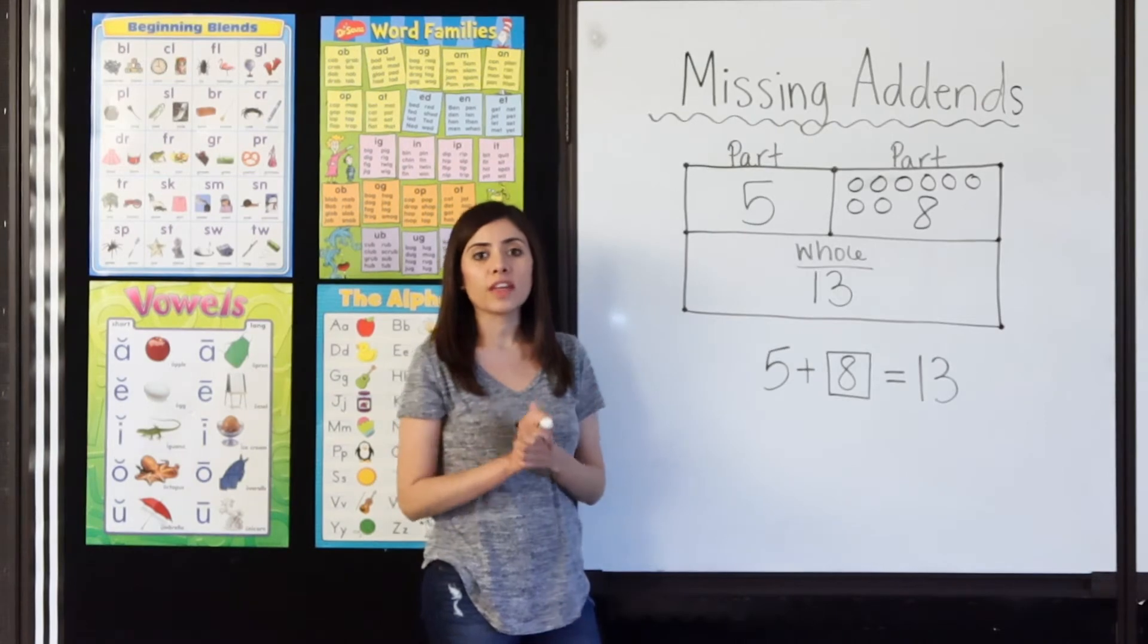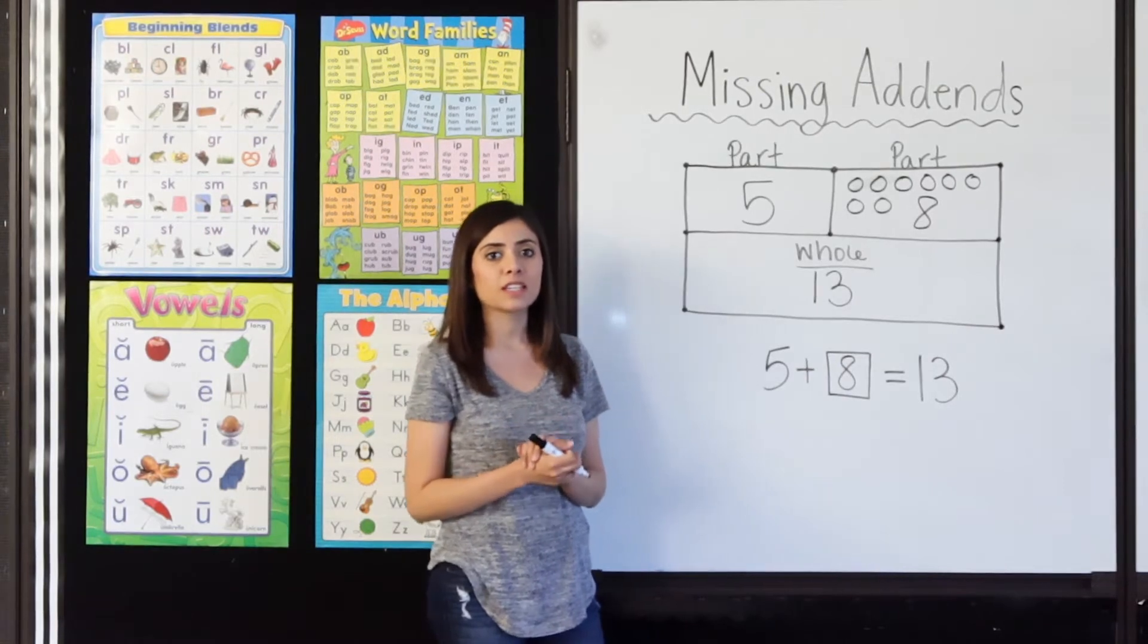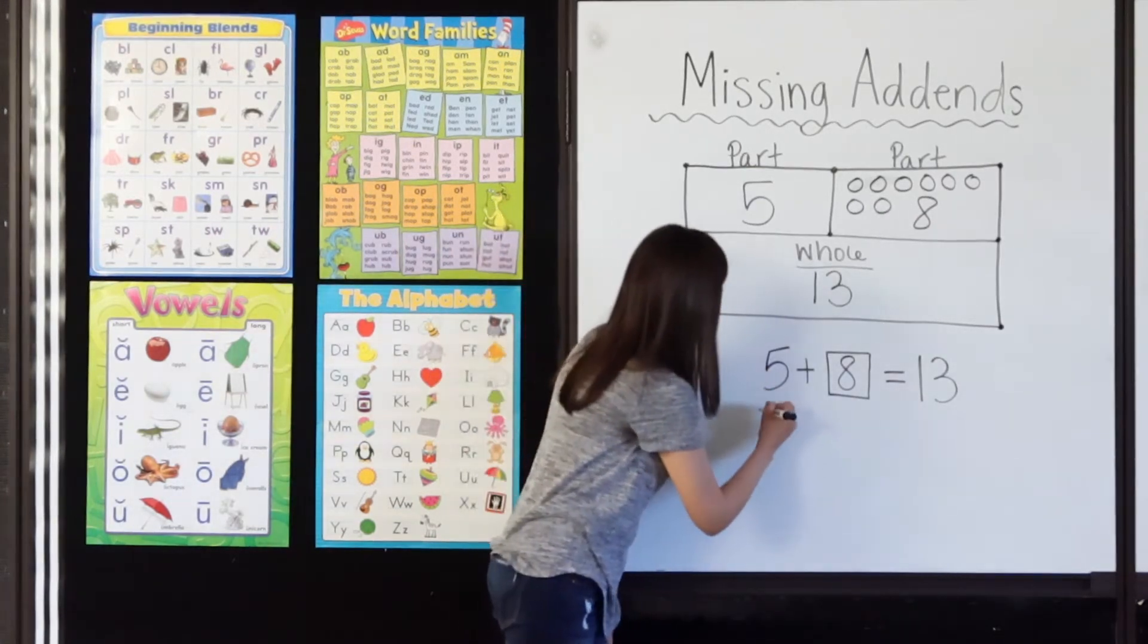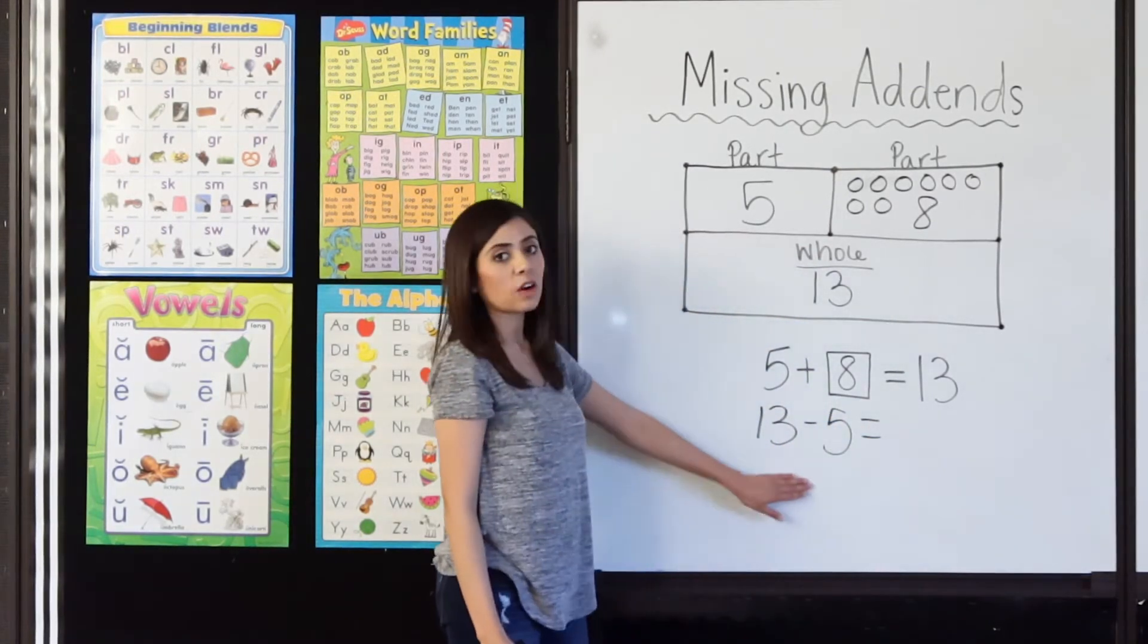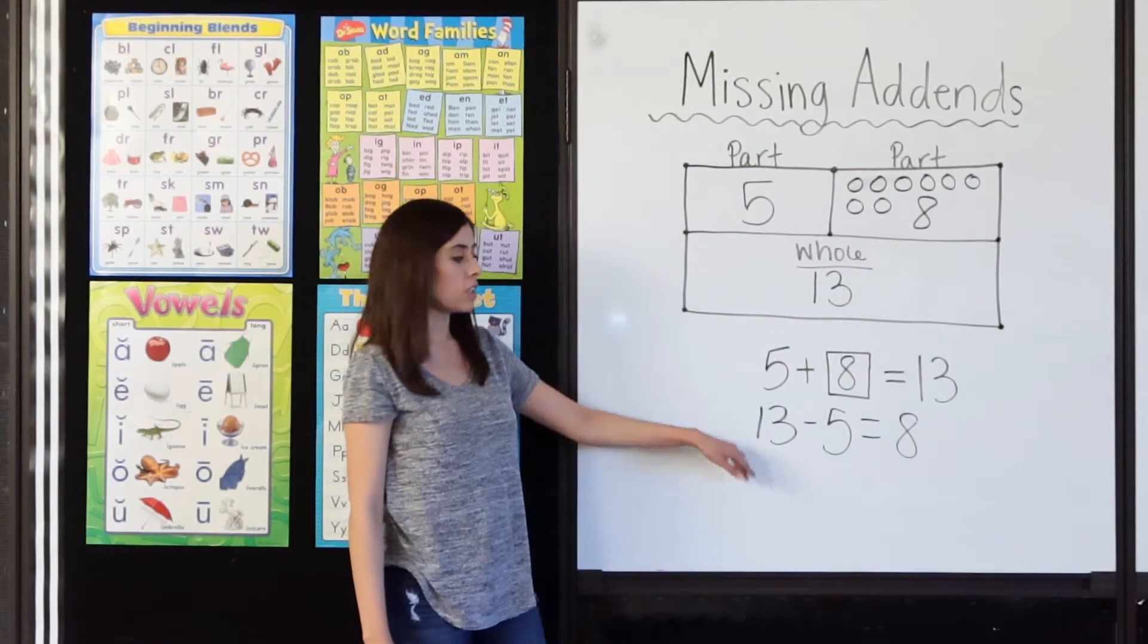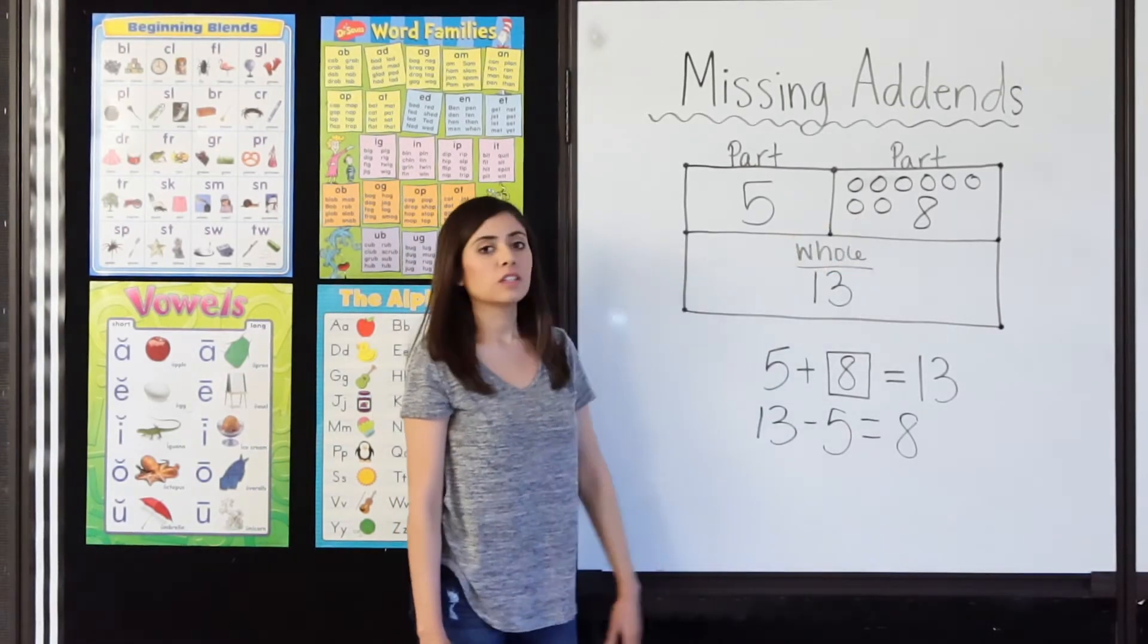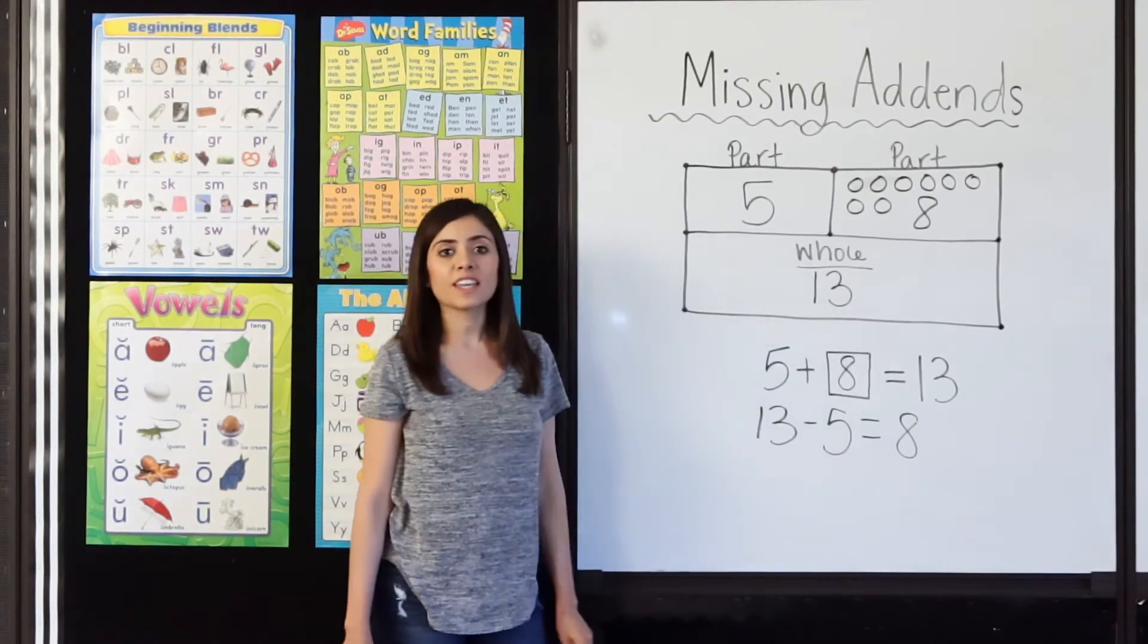Do you want to know another way we could have solved this? You could have used related facts to find your missing addends. Watch this. 5 plus hmm equals 13. I could have taken 13 and subtracted 5, and that would have given me 8. So you could have drawn 13 circles on the side, crossed off 5, and you would have had 8 left over. That would have been your missing addend. So do you see how related facts can also help me find missing addends? Awesome.